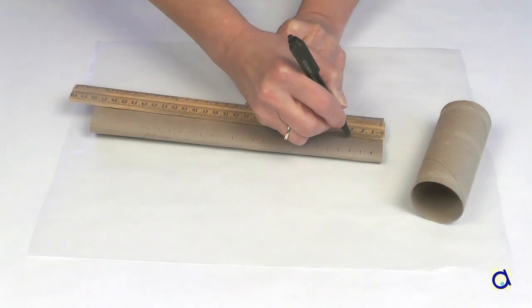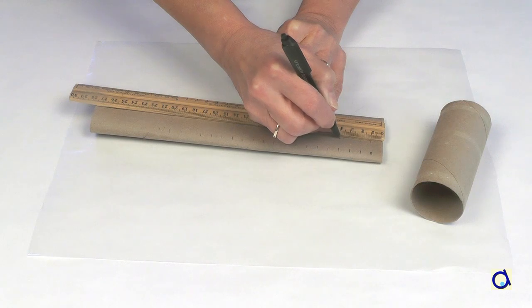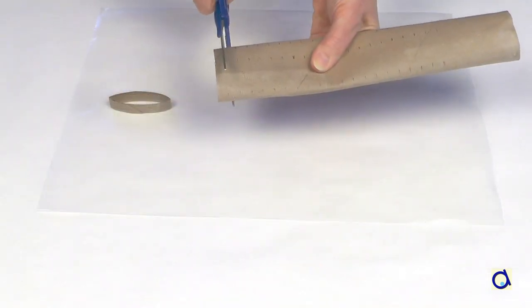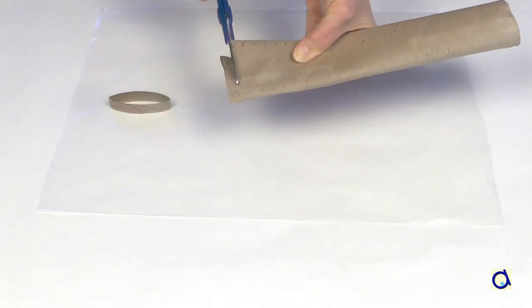For more precision, mark the tube in three places: on both sides of the tube and in the middle. When you have marked the tube, cut slices of tube.